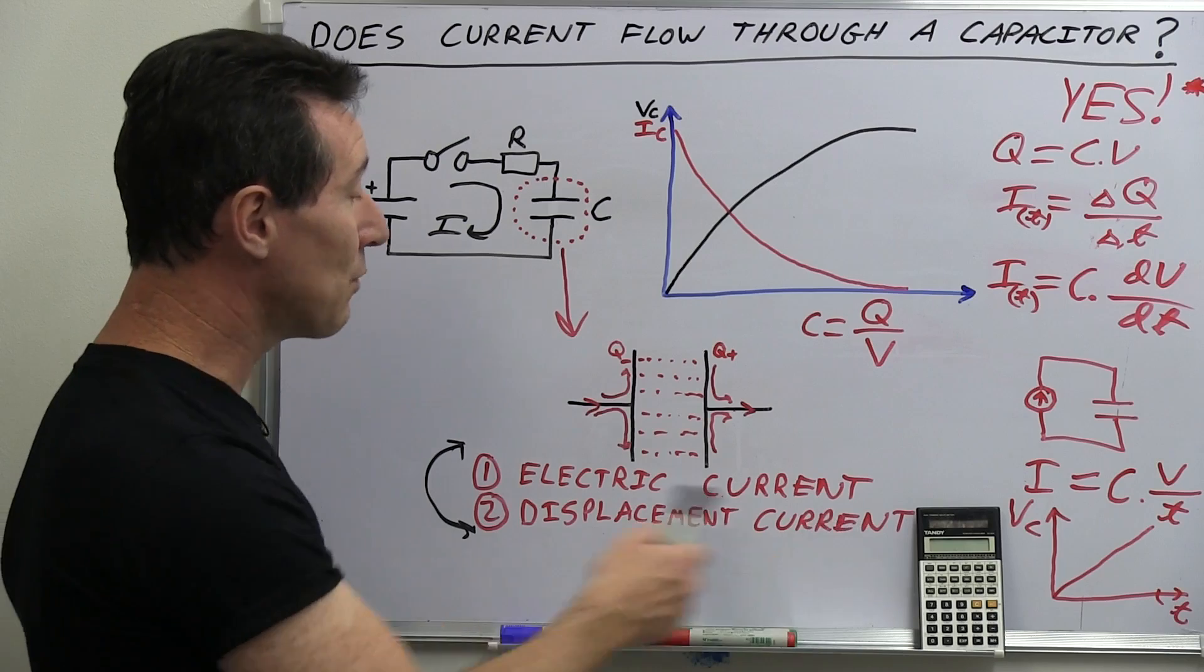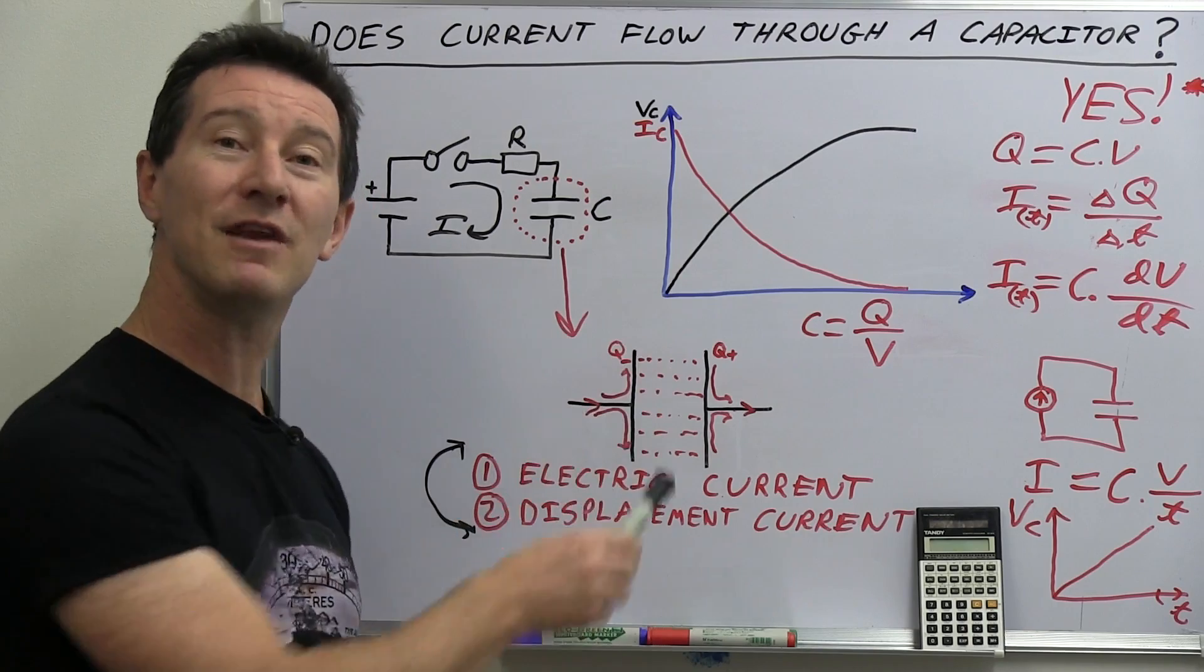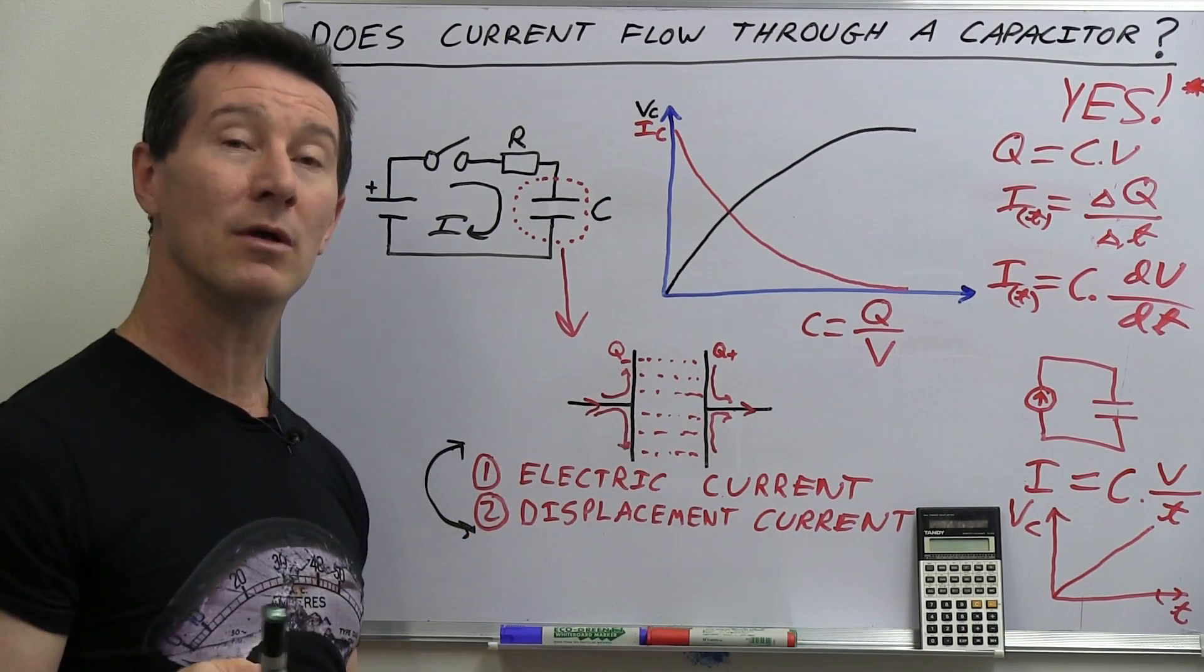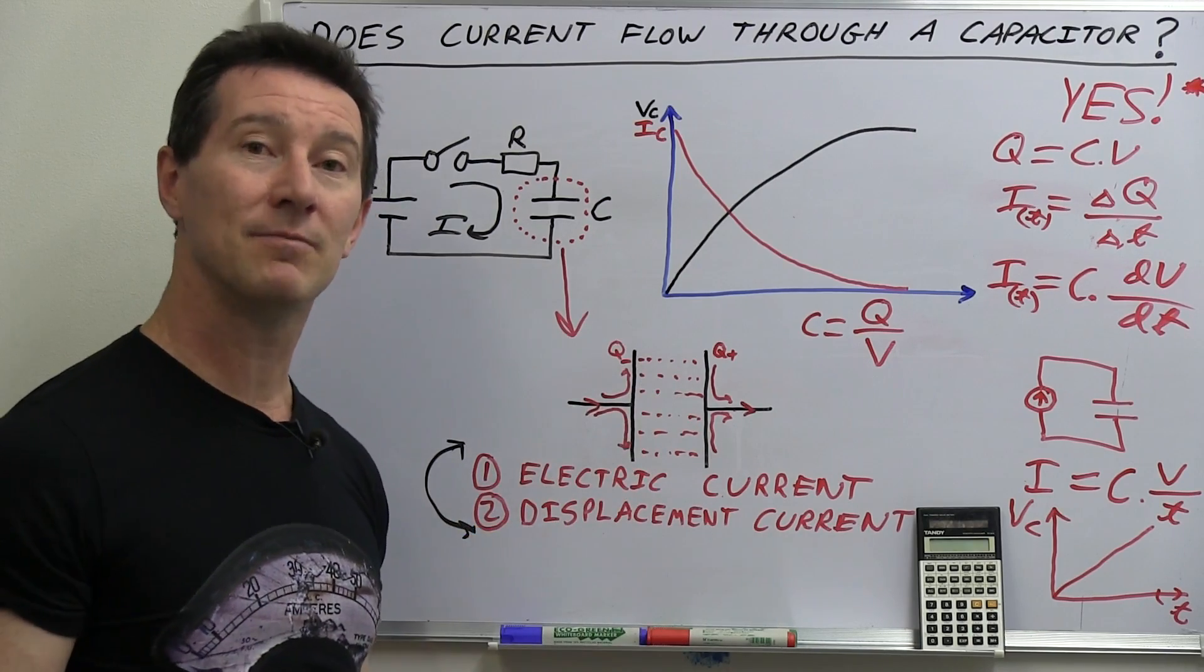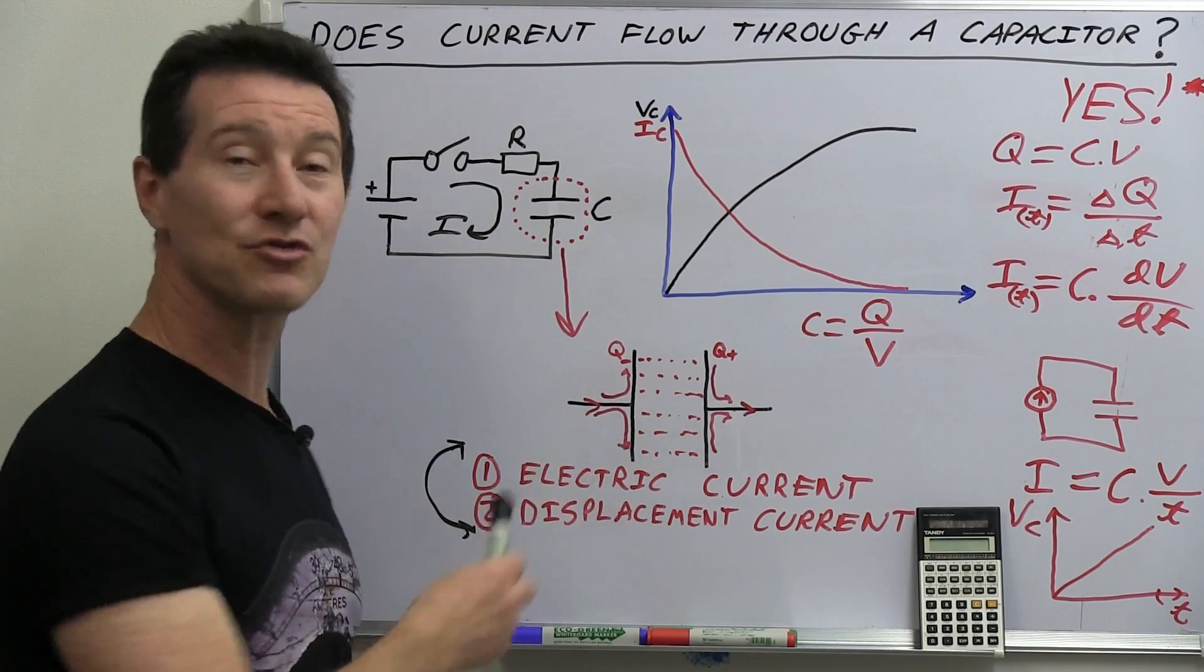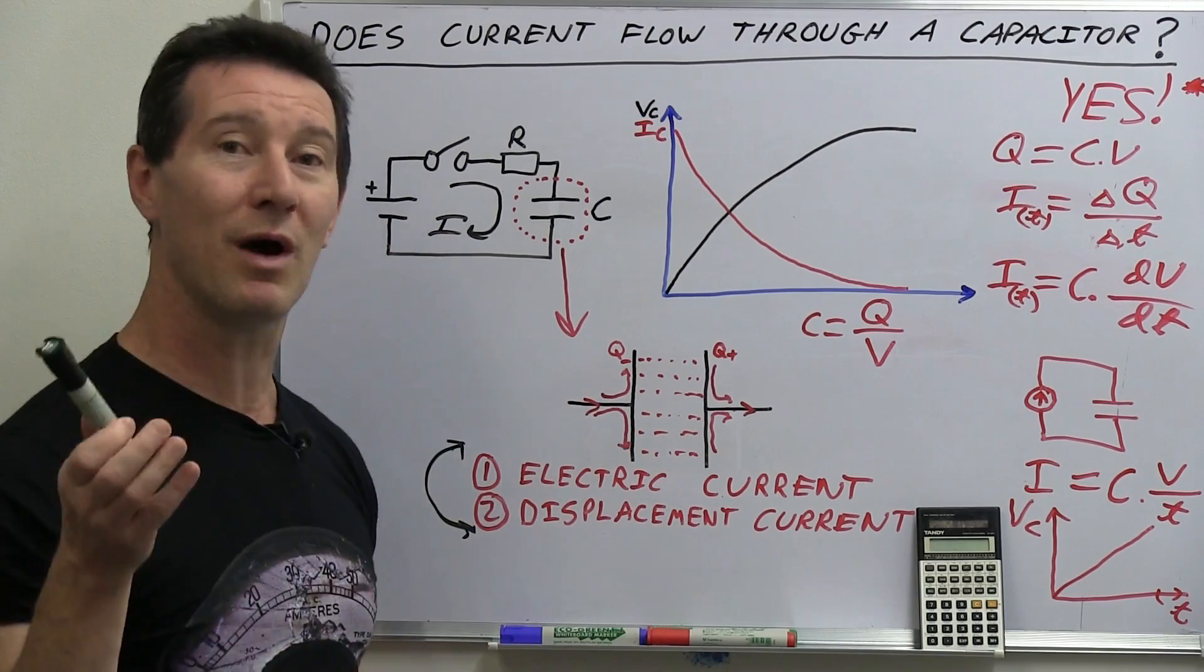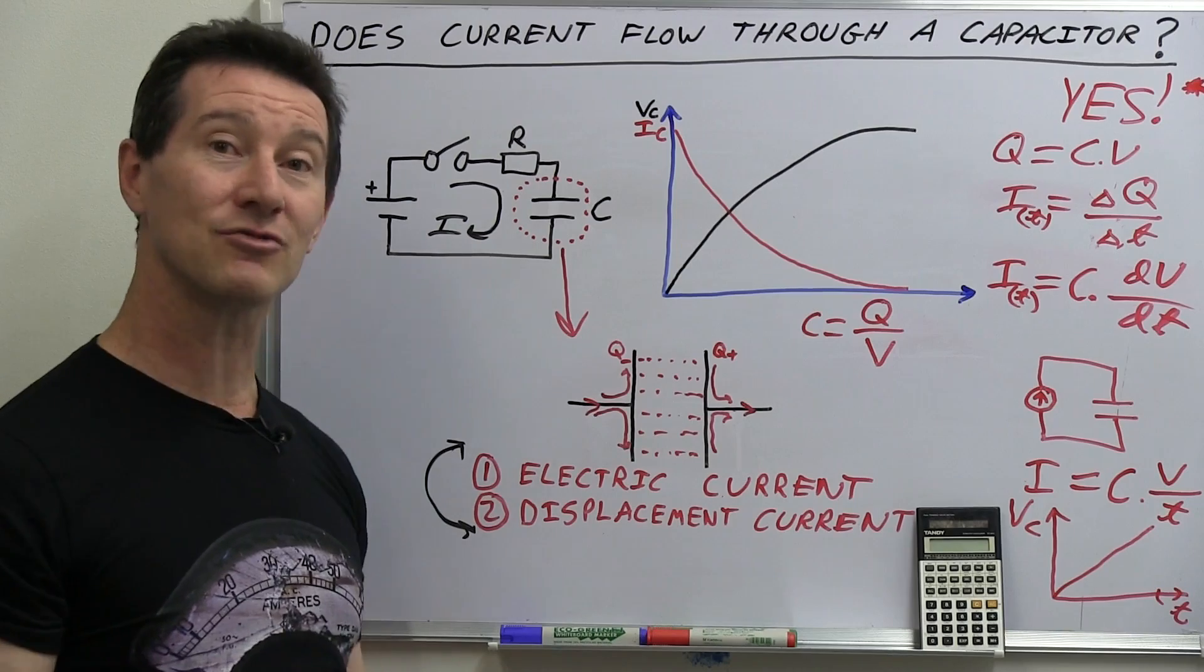And of course Maxwell just considered, didn't even consider the dielectric constant in here, even if it's a vacuum. He said, well, a vacuum is just a dielectric like everything else. It's just got a dielectric constant of one instead of, well, most other materials have a dielectric constant above one. But it's just a dielectric constant.